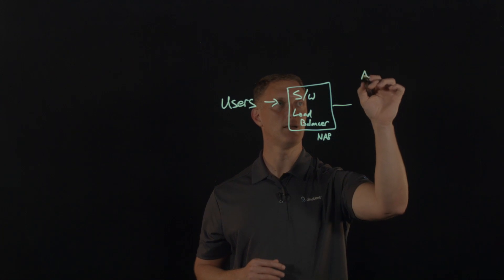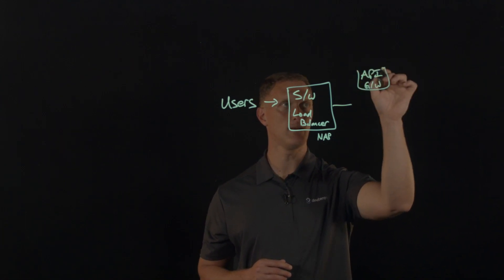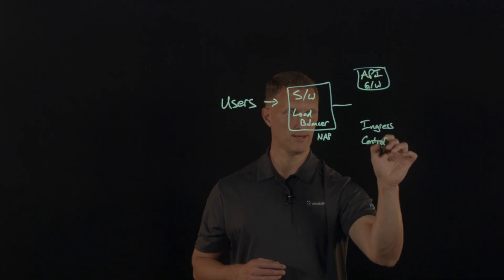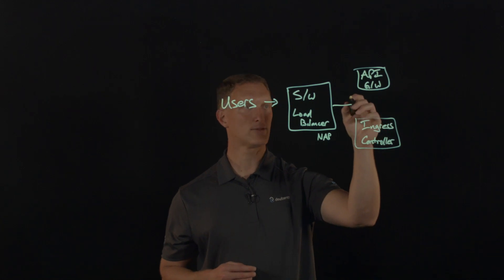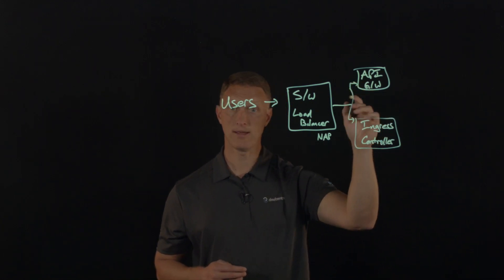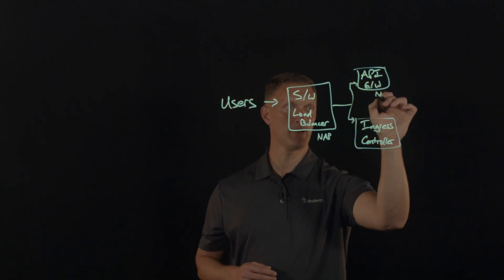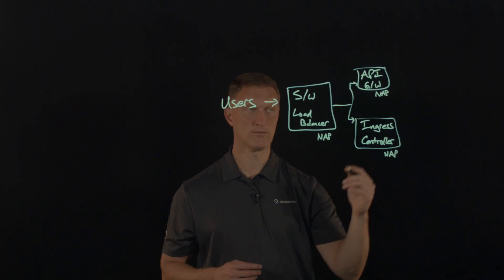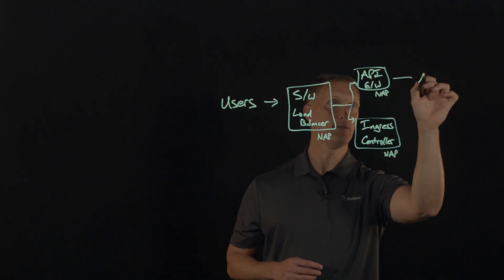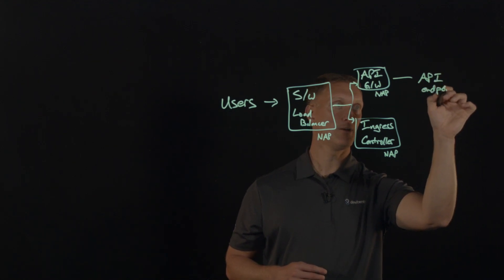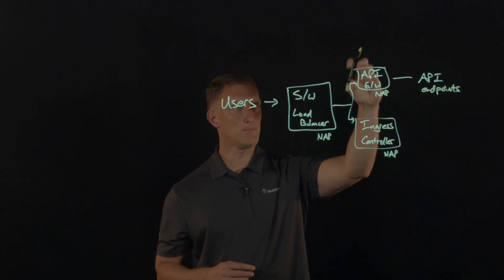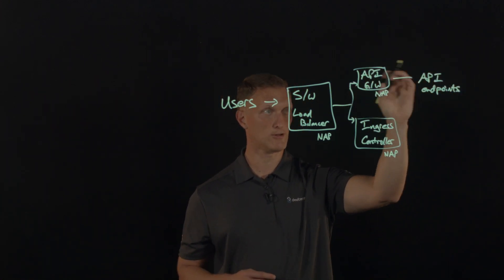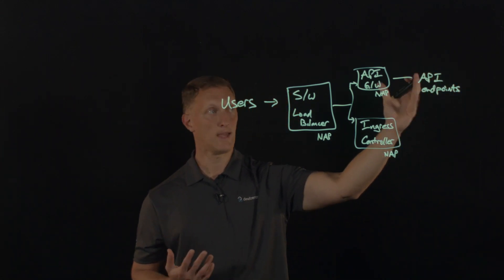Let's say you also employ an API gateway — I'll put that right here — or maybe you have an ingress controller like a Kubernetes ingress controller. Traffic may come this way as well. You could actually load NGINX App Protect right here on the API gateway, and you could also load it right here on the Kubernetes ingress controller. So the API gateway leads to API endpoints for your application, and loading NGINX App Protect on the API gateway puts it closer to those endpoints, giving you more flexibility and security against any kind of attack.